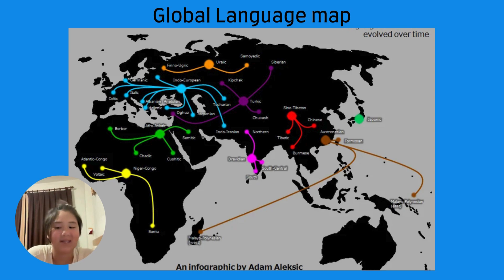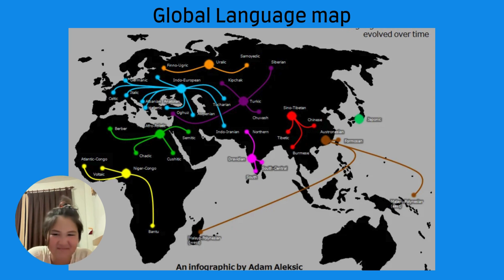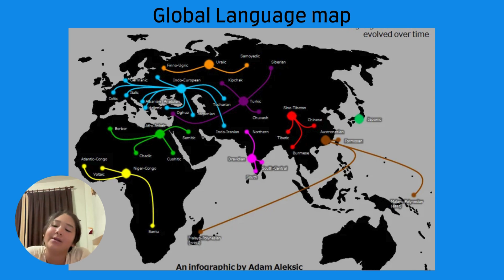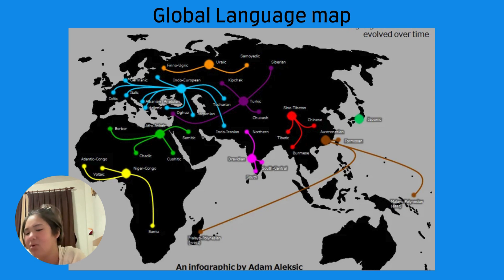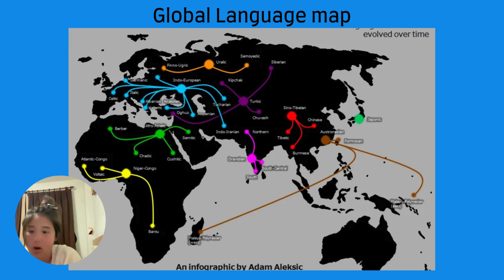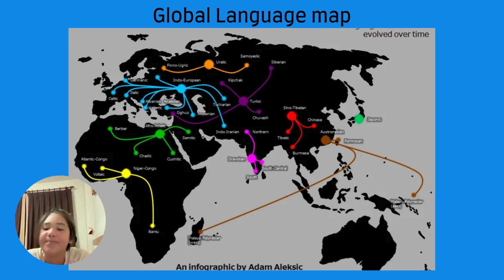Thai — where royalty speaks differently. Thai is a language with layers, like an onion but more confusing. There's regular Thai, the kind you use to order street food, and then there's Royal Thai — 'Ratchasap' — because why would the king need his own set of words? If you ever need to talk about the king's activities, don't say 'gin' for eat — use 'sawoei.' The king doesn't sleep the same way either; there are different words for different people, because why make it simple?